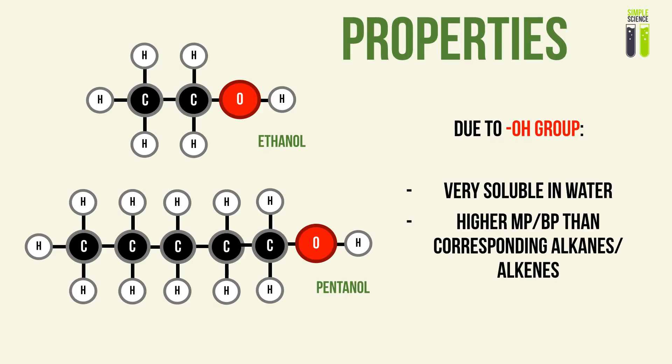Due to the OH group, which gives rise to hydrogen bonding, the solubility of alcohols in water is very high. Alcohols can mix very well with water compared to alkanes and alkenes. Also due to this OH group and hydrogen bonding, the boiling point and melting point of alcohols are significantly higher than those of alkanes and alkenes.